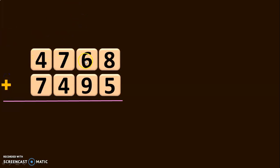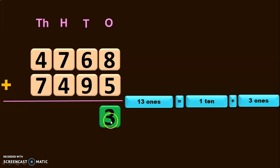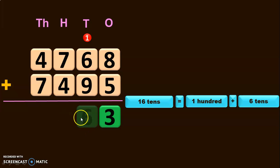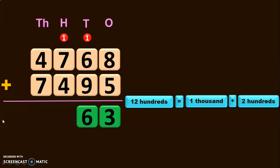We have 4,768 plus 7,495. Write down the place values and start the addition in the ones place. 8 plus 5 will give you 13 ones. 13 ones is 1 ten plus 3 ones. So write down the 3 ones in the ones place and 1 is carried over to the tens place. 1 plus 6 will give you 7, and 7 plus 9 will give you 16 tens. 16 tens is regrouped as 1 hundred plus 6 tens. So 6 tens is retained in the tens place and 1 is carried over to the hundreds place. 1 plus 7 will give you 8, and 8 plus 4 will give you 12 hundreds.